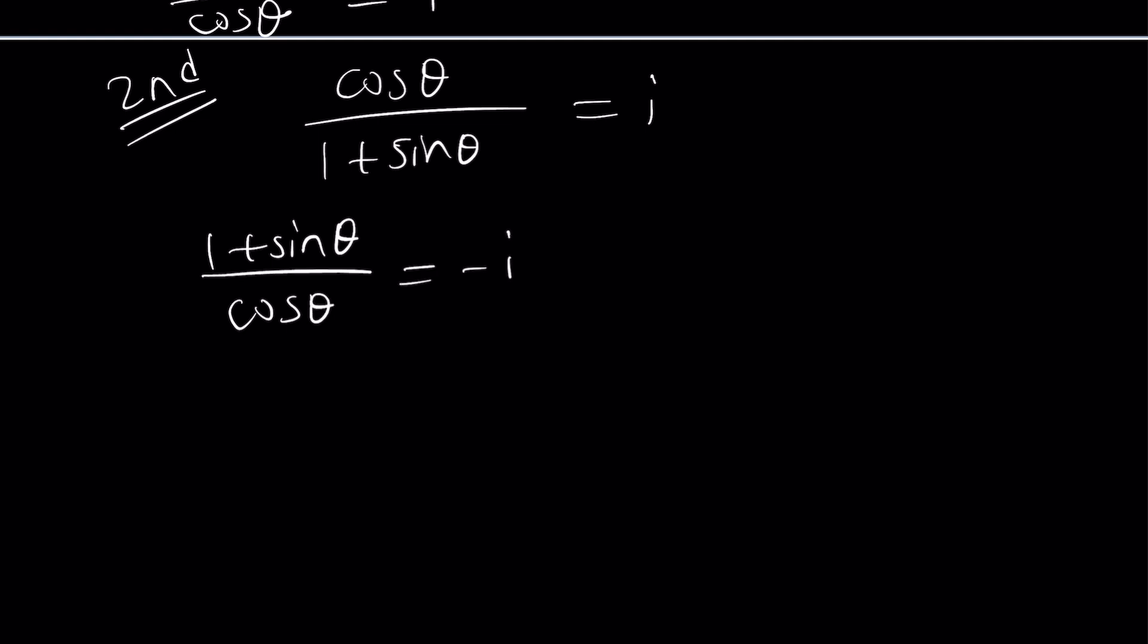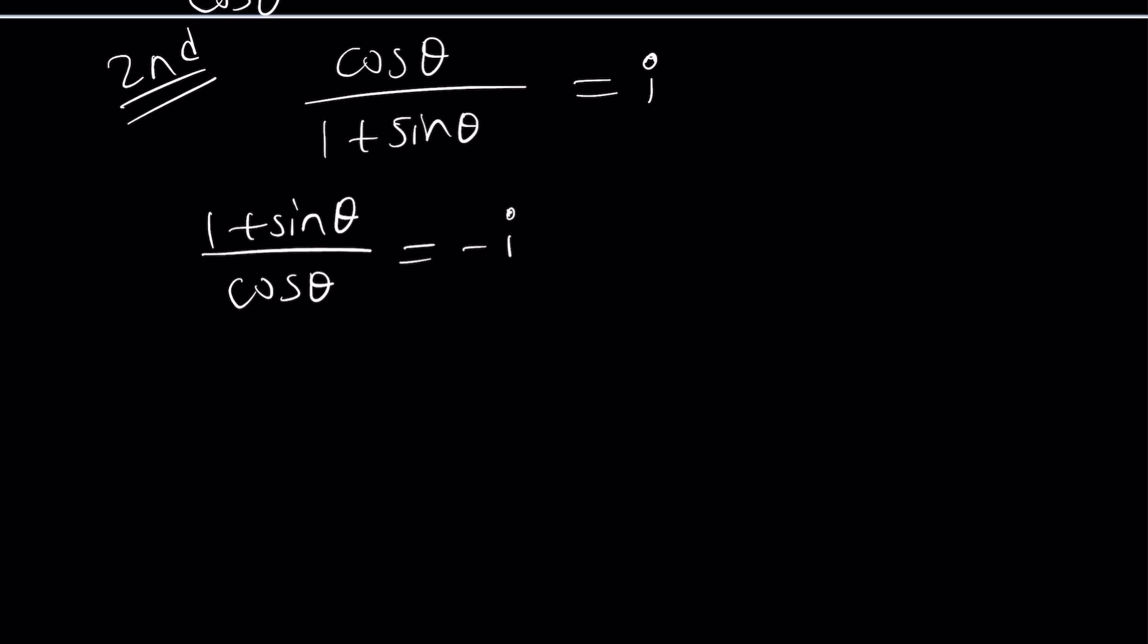Let's flip this. That gives us one plus sine theta divided by cosine theta is one over i but you should know that the reciprocal of i is negative i which is also its complex conjugate because its modulus is one. So at this point we're not going to just multiply by the conjugate. Instead we're going to separate them. That was the whole purpose.